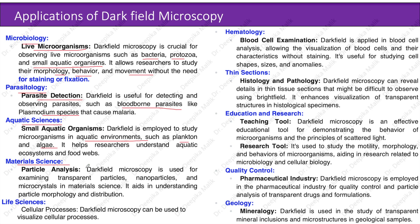Material science - particle analysis: dark field microscopy is used for examining transparent particles, nanoparticles, and microcrystals in material science, aiding in understanding particle morphology and distribution. In life sciences, dark field microscopy can be used to visualize cellular processes. In hematology, dark field is applied in blood cell analysis, allowing visualization of blood cells and their characteristics without staining; it's useful for studying cell shapes, size, and anomalies. Dark field microscopy can also reveal details in thin tissue sections and enhances visualization of transparent structures in histological specimens. As an educational and research tool, it is effective for demonstrating the behavior of microorganisms and studying the motility, morphology, and behavior of microorganisms, aiding research in microbiology and cellular biology.